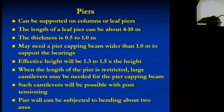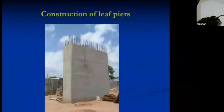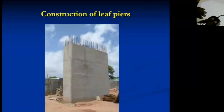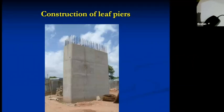In a bridge, before we start the lecture series it's good to understand the terminology. We get the foundation — either a raft foundation or a pile foundation. Then we get the substructure, which means the piers and abutments — the structure below the deck and above the ground level. The deck is called the superstructure. Below the ground level is called the foundation.